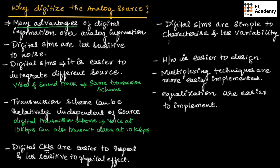Since digital systems transmit data as 1s and 0s, they are simple to characterize with less variability — only two types of representation exist. The hardware of digital systems is easier to design compared to analog systems, and multiplexing techniques are more easily implemented in digital systems.